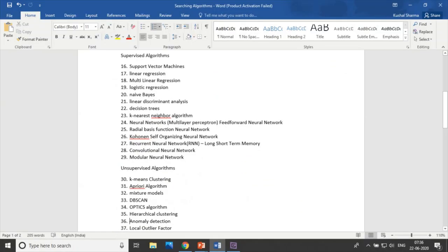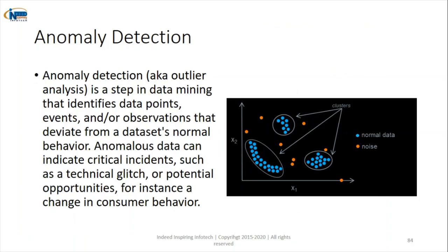The thirty-sixth algorithm is anomaly detection — also known as outlier detection. Here we need to identify outliers: values that fall quite far away from the main groups. These values are called noise or outliers, and identifying them is called anomaly detection.